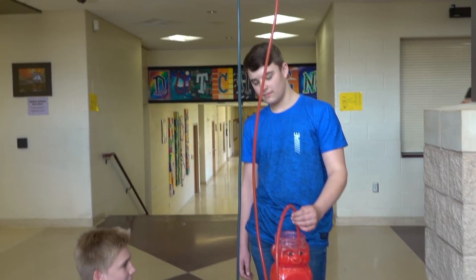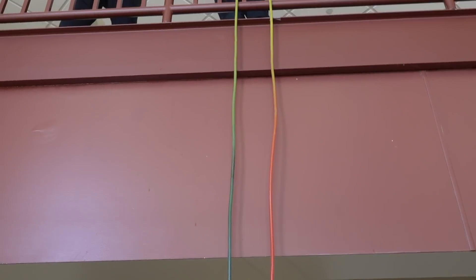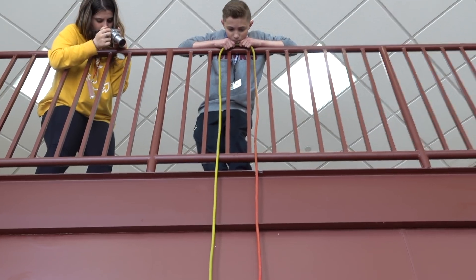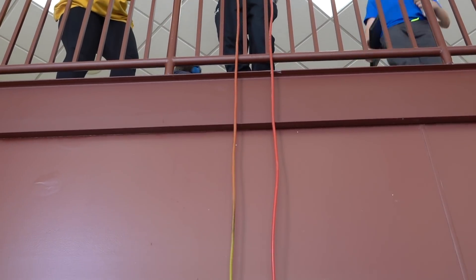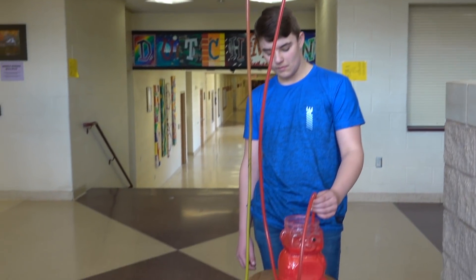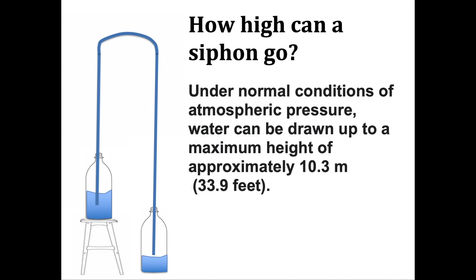In this case, we were able to lift the siphon up to about 18 feet and found that it still flowed without any problems. How high can a siphon go? Under normal conditions of atmospheric pressure, water can be drawn up to about a maximum height of 10.3 meters, which is about 33.9 feet.